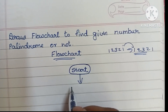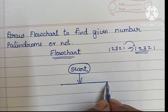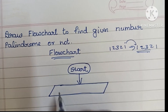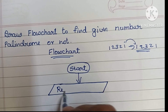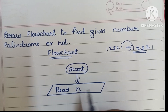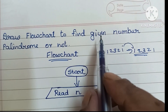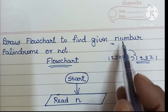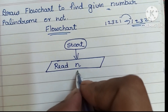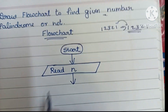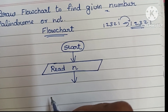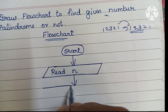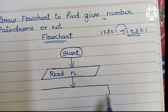The next step is to read input values. Input values are always written within a parallelogram shape. Within that we have to read n — here we have to find whether a given number is a palindrome, so we read a number n.